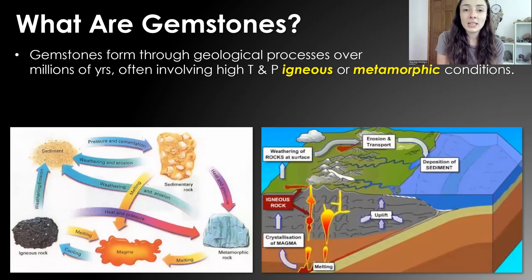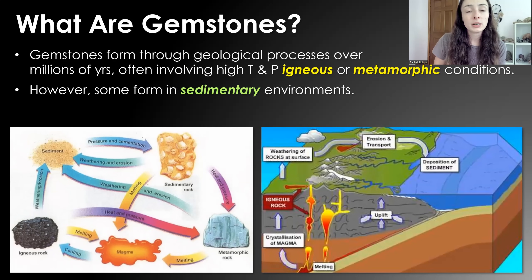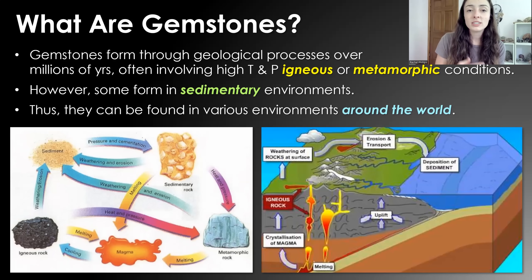Gemstones form through many types of geological processes like igneous ones, metamorphic ones involving high temperature and high pressure, but can also be formed in sedimentary environments — many of the ones we'll talk about in today's video. Therefore they can basically be found almost anywhere on earth, in any environment, because they're not just formed by one process. There's actually such a variety they can be formed in many different ways.